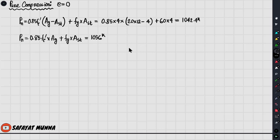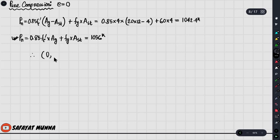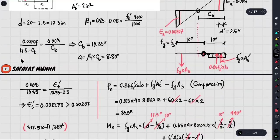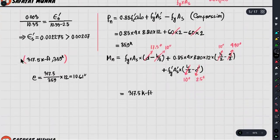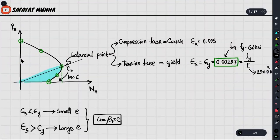When we draw the interaction diagram, we have to consider this point. Then we have to consider the final point. The momentary value is 0 and the compression value is 1056. Last, we have to consider the same point — which is the lower point on the diagram. We have to consider the pure bending point.